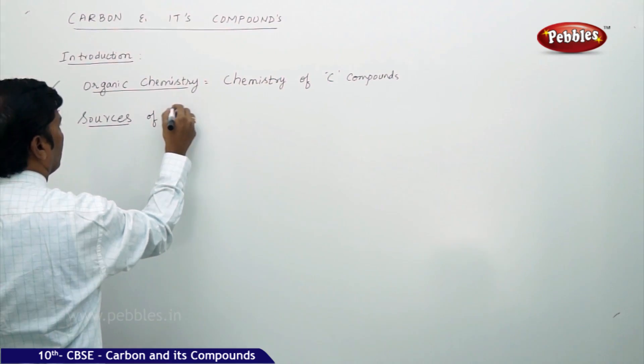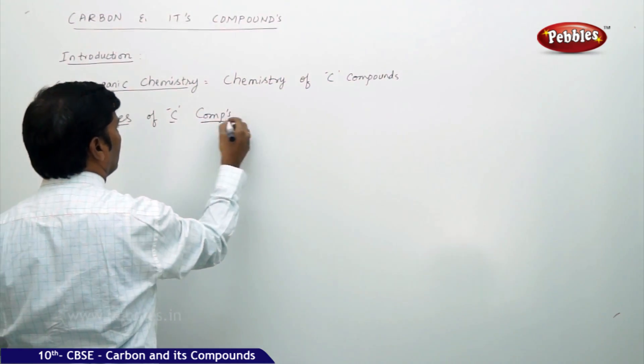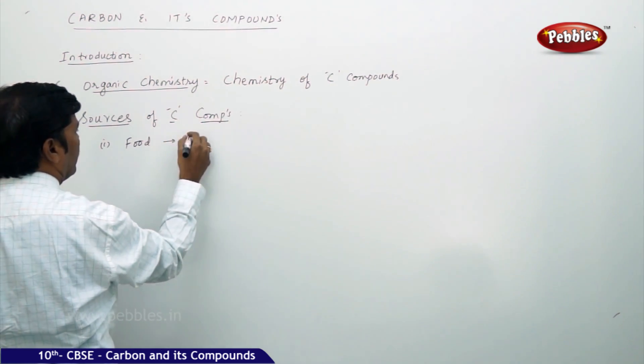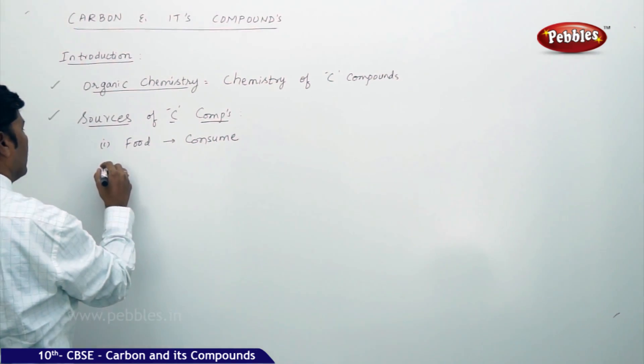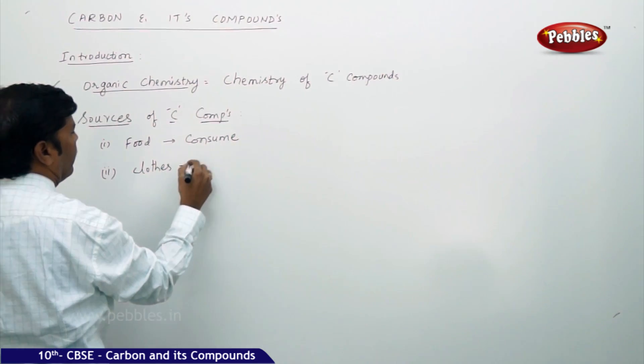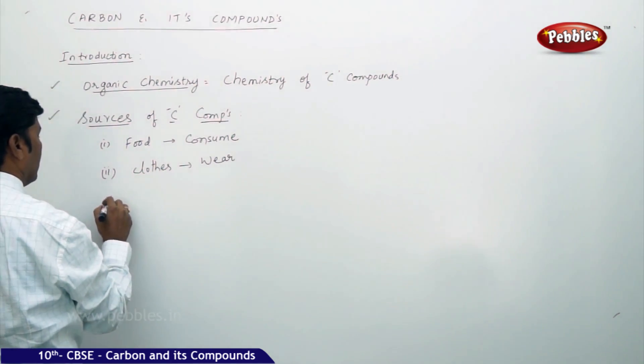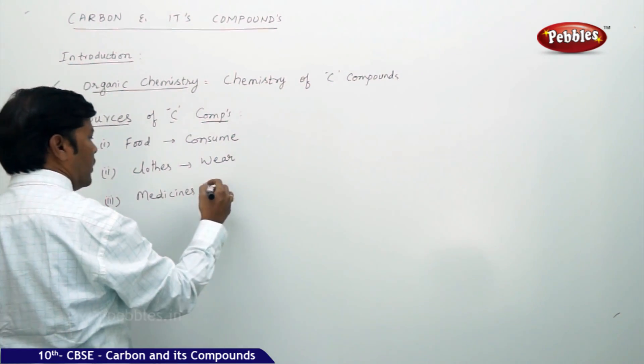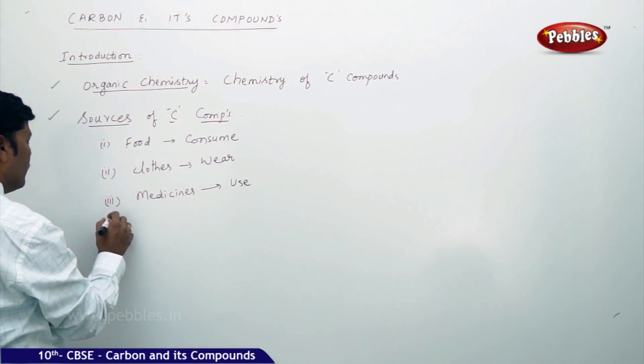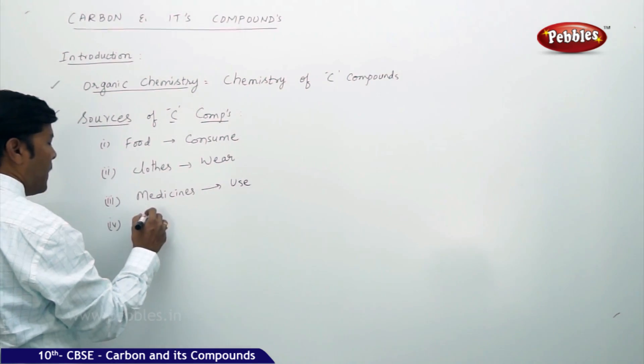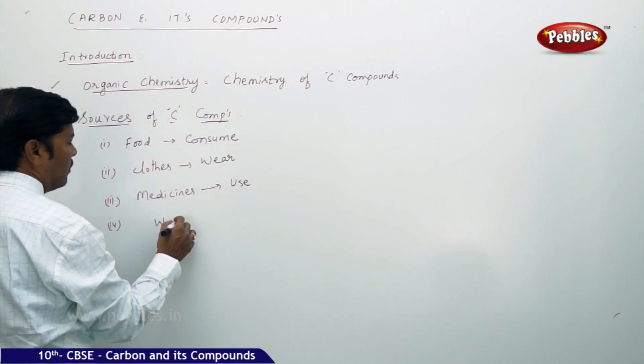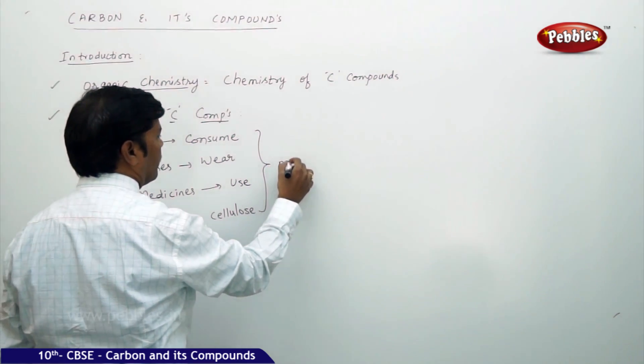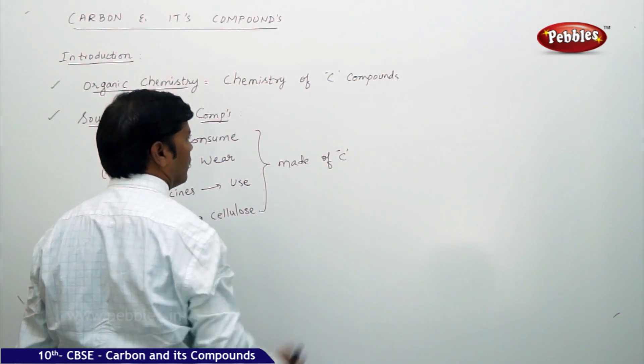If you take sources of carbon compounds, here we can take food we consume, the clothes we wear, medicines which we use, and wood which contains cellulose. All these are made of carbon.